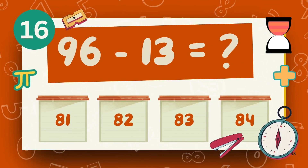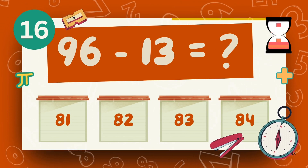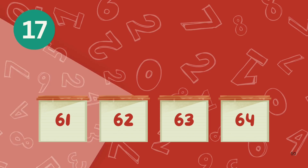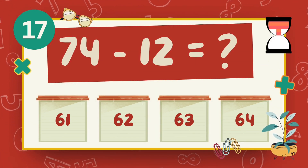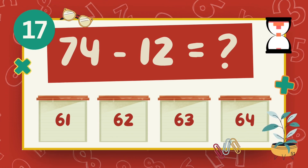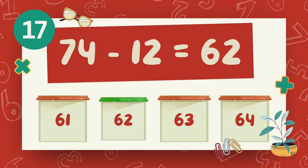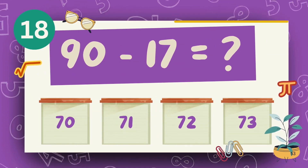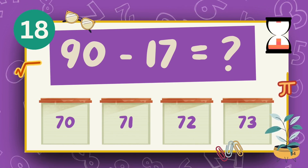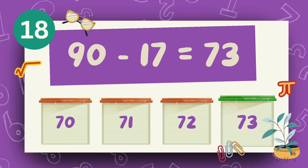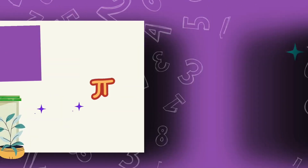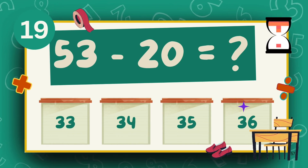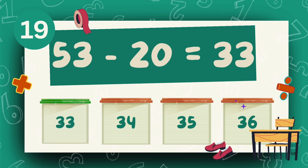What is 96 minus 13? The answer is 83. What is 90 minus 17? The answer is 73. What is 53 minus 20? The answer is 33.